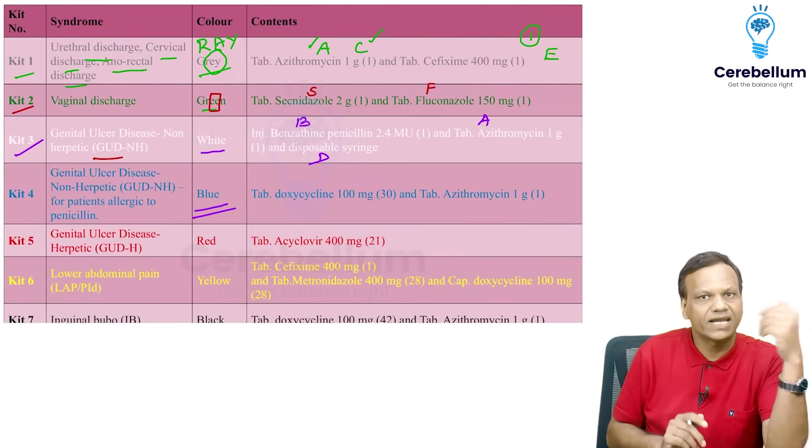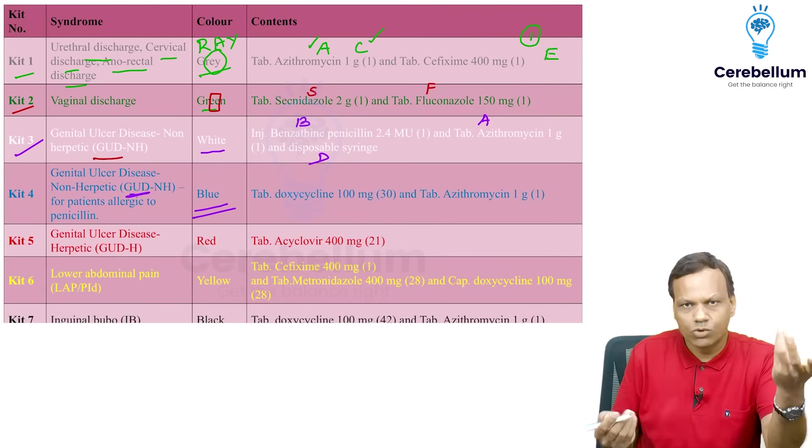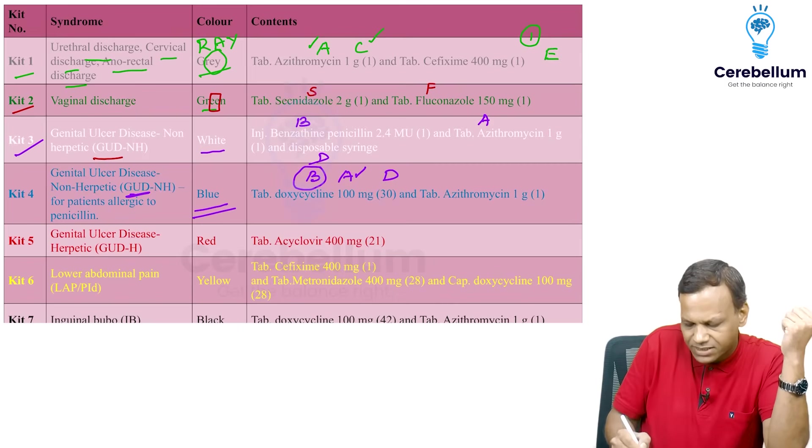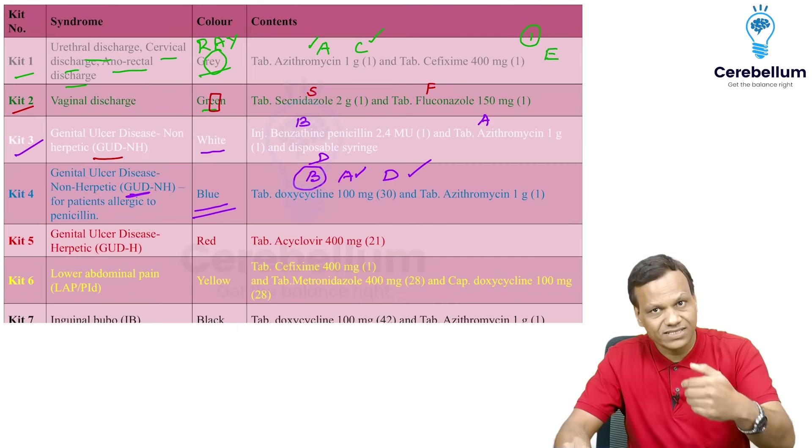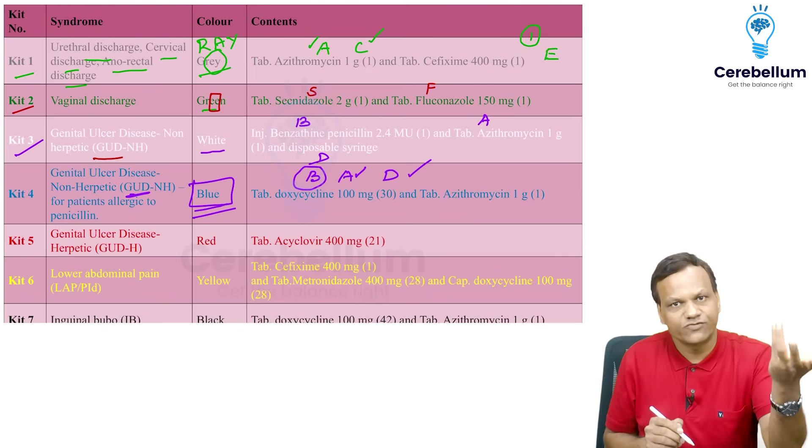So if there is penicillin allergy, it is blue. So penicillin allergy, it is blue. So it is genital ulcer disease, it is good again. It is blue in color. So again, when it is good, there must be something bad. So what are the drugs here? We have bad. So you can remember blue color. It contains azithromycin and doxycycline. Blue color contains azithromycin and doxycycline. Then coming to kit 4. So blue color, you can remember 4. Blue has 4 letters, so kit is 4.